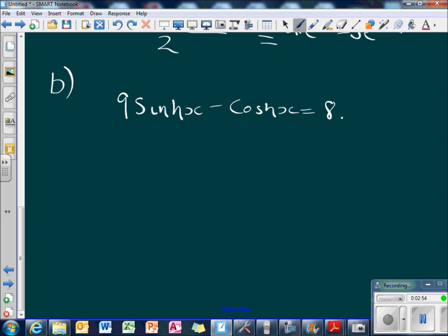So now using what we found from part a, i.e. 4 e to the x minus 5 e to the minus x is 9 sinh x minus cosh x and that just equals 8.